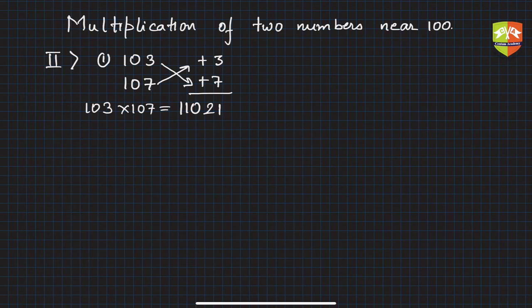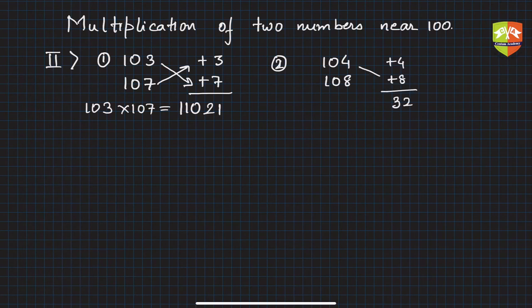Let's take another example to verify this works. We have 104 and 108. How far from 100? Plus 4 and plus 8. 8 times 4 is 32. 104 plus 8 is 112, so the product is 11232.